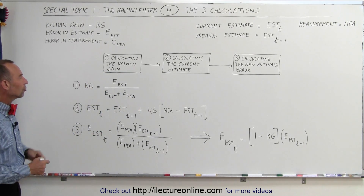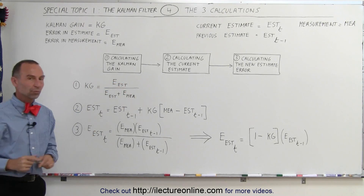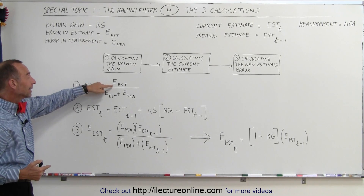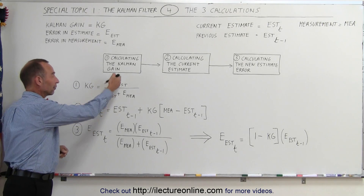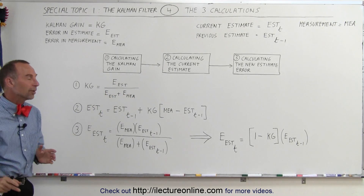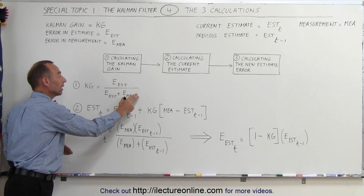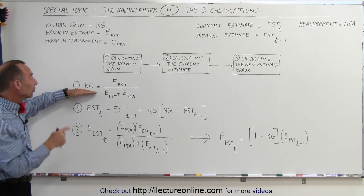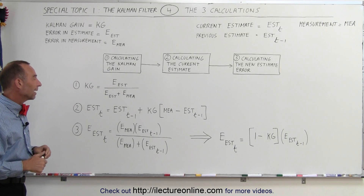The Kalman gain is the ratio of the error in the estimate divided by the error in the estimate added to the error in the measurement. If the Kalman gain is large, that means the error in the estimate is large compared to the error in the measurement — the error of the estimate divided by itself is almost equal to 1, and the measurement error is not much of a contributor in the denominator. On the other hand, if the Kalman gain is small, that means the error in the measurement is large compared to the error in the estimate.